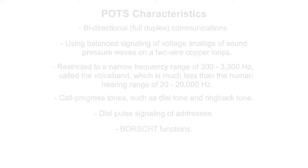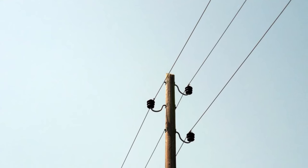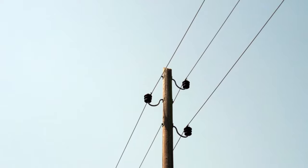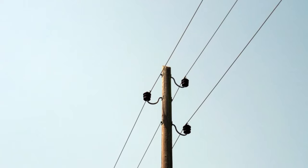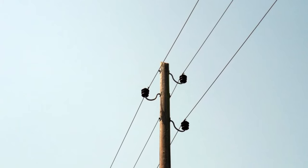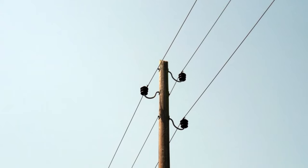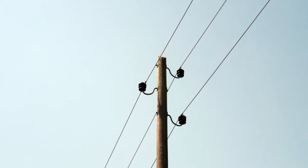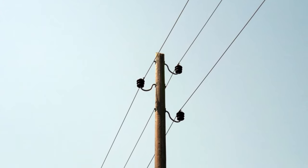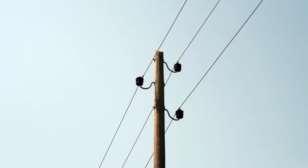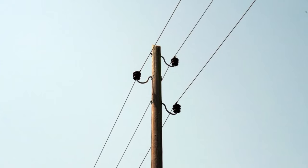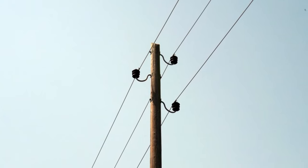The pair of wires from the central office switch to a subscriber's home is called a subscriber loop. It carries a direct current voltage at a nominal voltage of minus 48 volts when the receiver is on hook, supplied by a power conversion system in the central office.